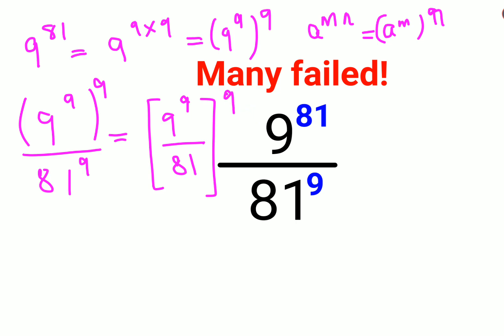Now remember, 81 can be written as what? So we have 9 raised to 9 upon - instead of 81, I can write this as 9 squared. Everything is still raised to 9.